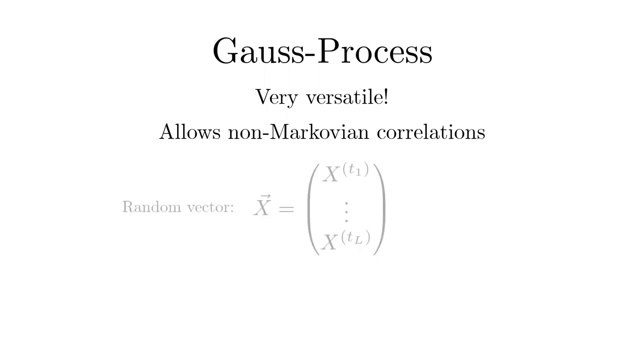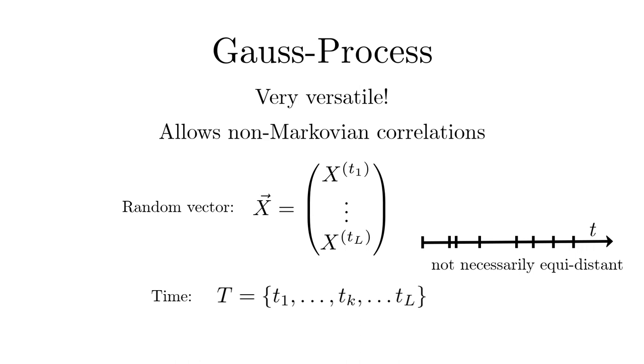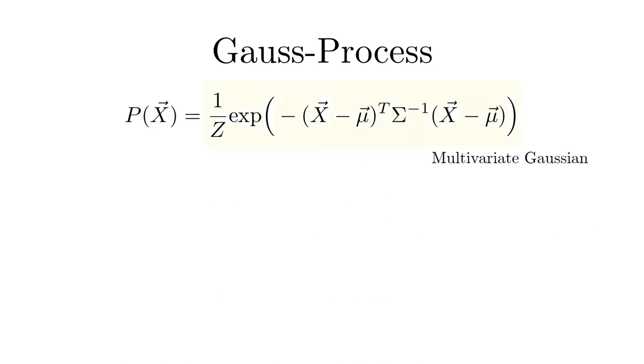Now we turn to Gaussian processes. They are a special type of stochastic processes that are very versatile and also allow for non-Markovian properties where one can choose parameters that describe the correlation of the random variables. For easier understanding we will give a specialized and simplified definition of a Gaussian process that nevertheless covers most applications. The index of the random variable x sub t shall be time and we only consider a finite set of discrete times. The generalization to space or other index sets is obvious. The vector formed by the corresponding random variables is multivariate Gaussian. A multivariate Gaussian is given by and it is characterized by its mean and its covariance.